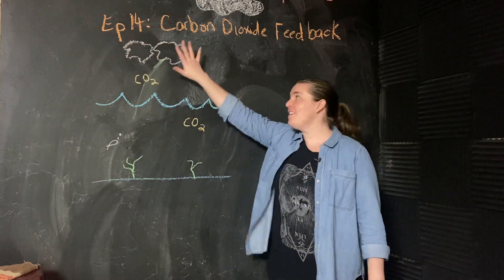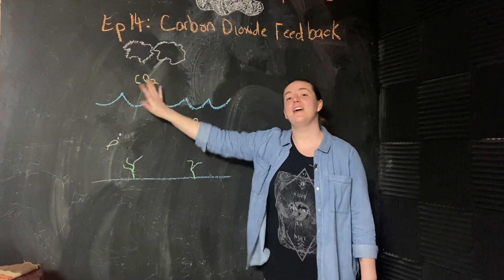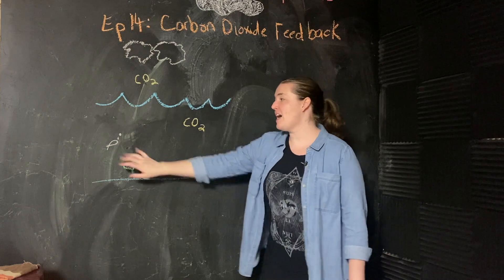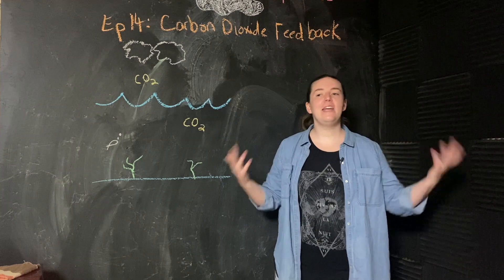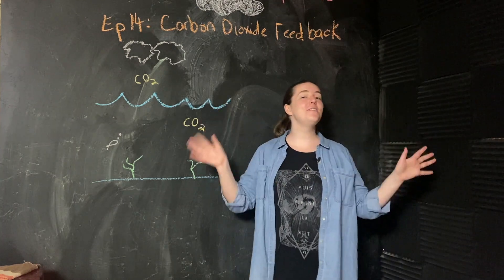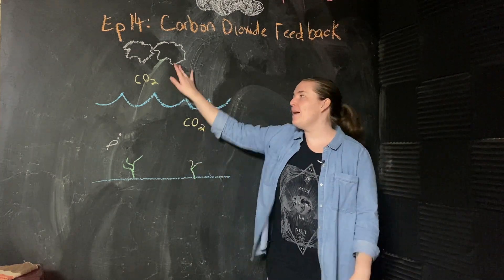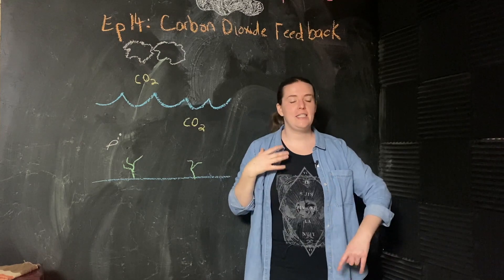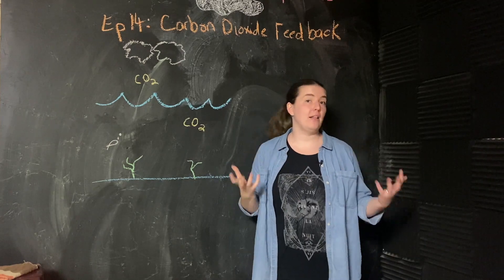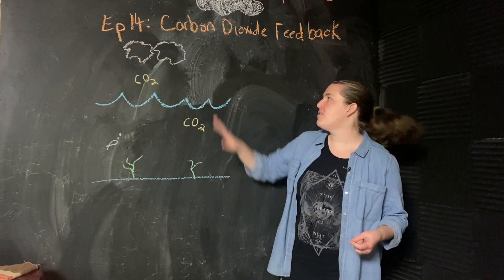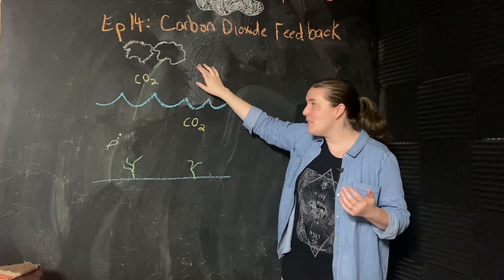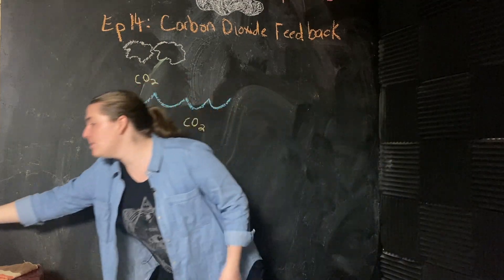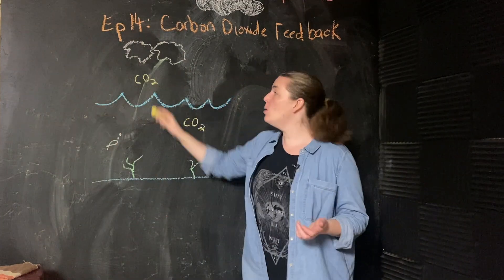All right, team. So we've got the atmosphere with its carbon dioxide, and we've got the ocean with a happy little fish and its carbon dioxide. And in nature, just kind of left to their own devices, the atmosphere and the ocean are going to try to reach some sort of balance. So if there's too much carbon dioxide in the atmosphere, it will move down. It'll be absorbed into the ocean, right?